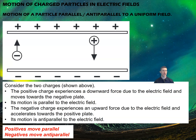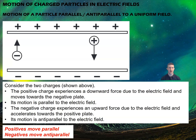Considering two charges in a parallel plate setup: a positive charge experiences a downward force because the electric field pushes it away from the positive plate — its motion is parallel to the field. A negative charge experiences an upward force and accelerates towards the positive plate, moving against the electric field — this is anti-parallel motion. So moving parallel to the field means moving in the direction of the field lines; anti-parallel means moving 180 degrees against them. Positives move parallel, negatives move anti-parallel.